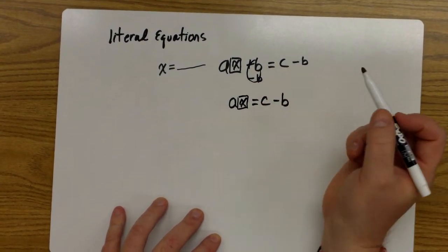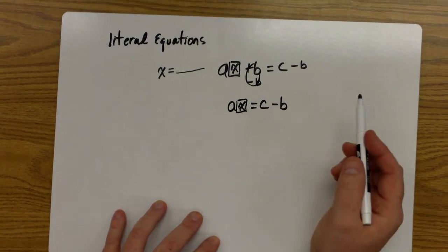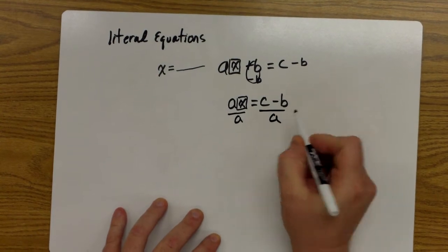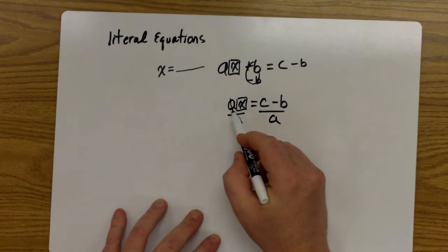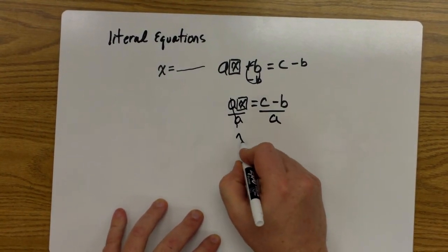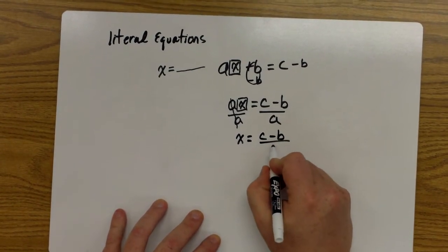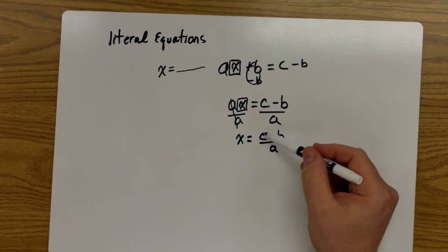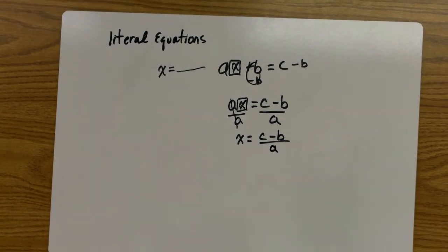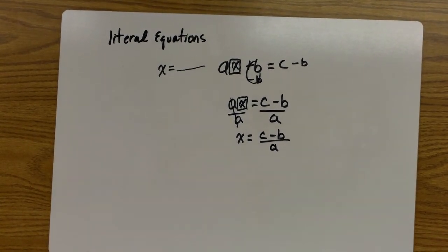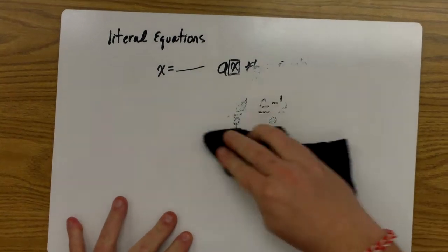Now, I still want my X by itself, so I have to get rid of my times A. So I'm going to divide by A on this side, and I'm going to divide A on this side. A over A gives us one, and we are now left with X equal to C minus B all over A. And just like a formula, I can then go and substitute in values for C, B, and A, and do a subtraction and division and calculate the value of X. That's just one simple one. Let's try another one.